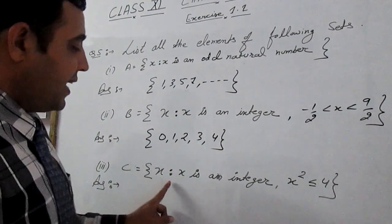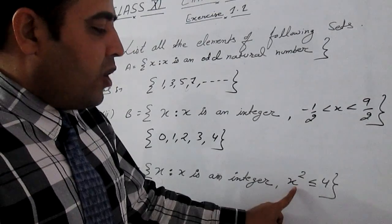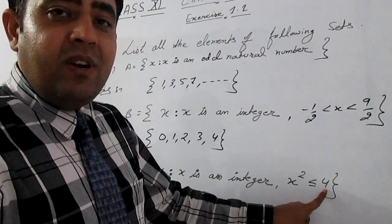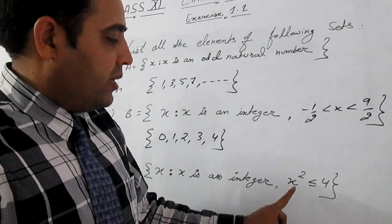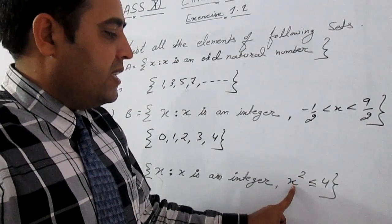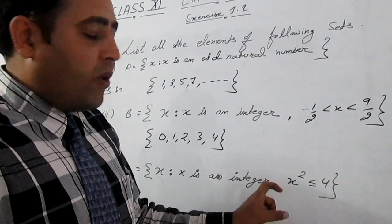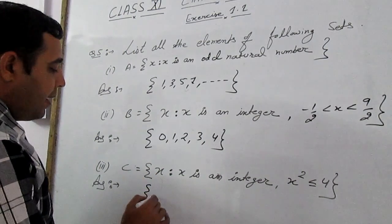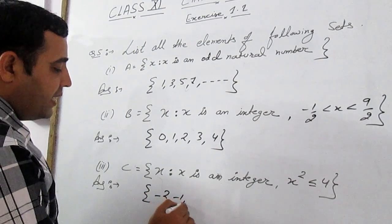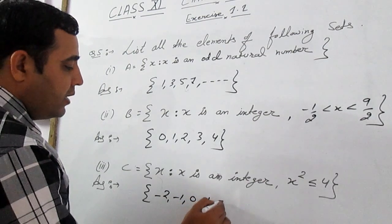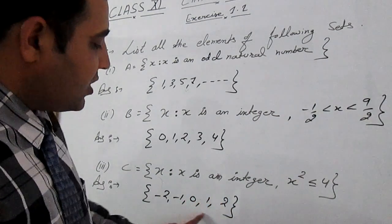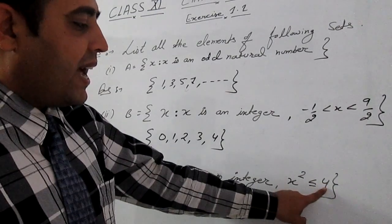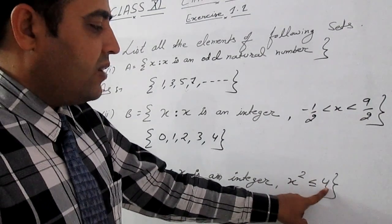C part is X is such that X is an integer. Value of X square is less than equal to 4. Then those integers whose value is less than equal to 4, if we do square, then those integers are minus 2, minus 1, 0, 1 and 2. As we do squares of these numbers, all of these are either equal to or less than 4.